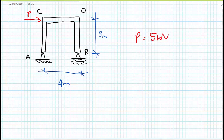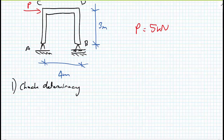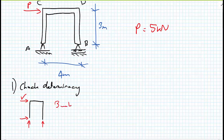The first thing we want to do is check if this structure is statically determinate. Inspecting the structure, we have no hinges, so we look at the free-body diagram of the entire structure. We have potential reactions in the horizontal and vertical directions at A, and a vertical reaction at B — three unknowns and three equations of equilibrium. So yes, it is a determinate structure.